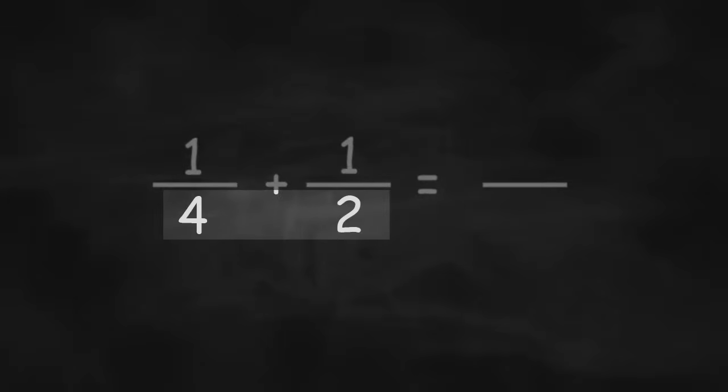Now it can get a little bit more complicated. So we look at this next equation. We have 1 quarter plus 1 half. Now we have different denominators, so we can't just add these together.